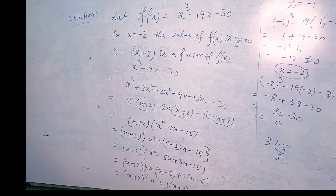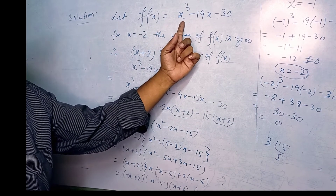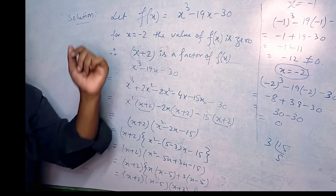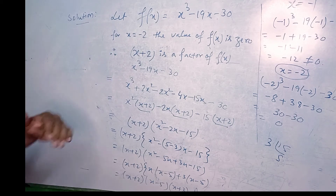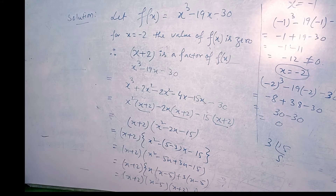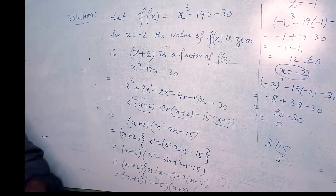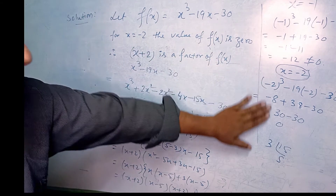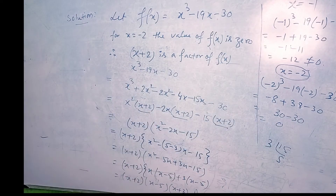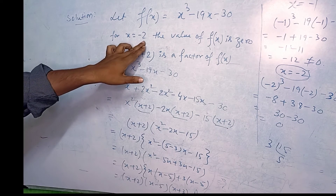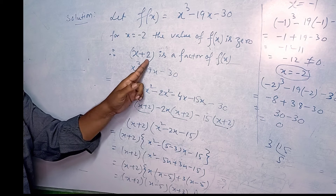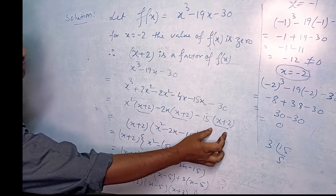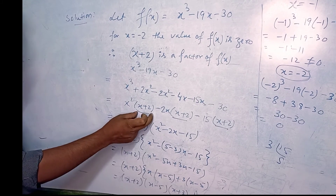Let me explain again for your help. The given question is x cubed minus 19x minus 30. We let this polynomial as f(x), which means function of x. We assume a value of x — any number: 1, minus 1, 2, minus 2, but do not take 0. For x equal to minus 2, we get the value of the polynomial is 0. Therefore x plus 2 is a factor of f(x). We write x plus 2 three times from the second line.